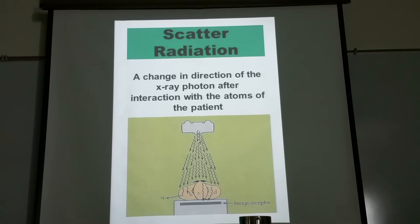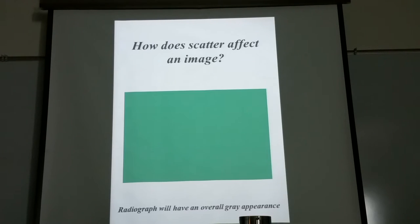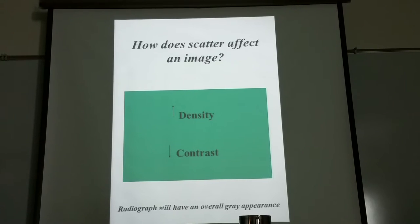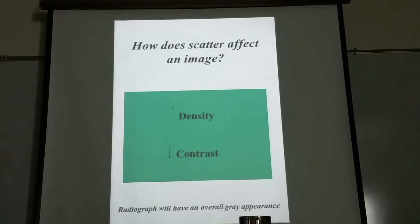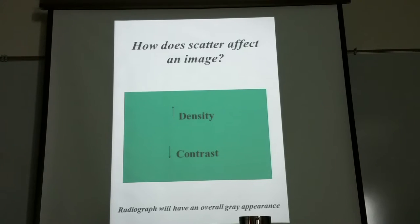Scatter radiation is a change in direction of the x-ray photon after interaction with atoms from the patient. How does scatter radiation affect the image? It increases density, also known as fog. Picture the image getting darker — what happens to overall contrast? It goes from black and white to more gray. And if it's too dark, too gray, you also lose detail and resolution.